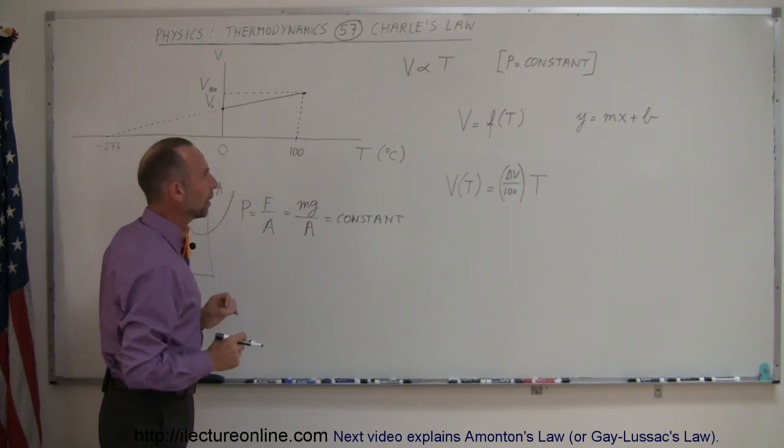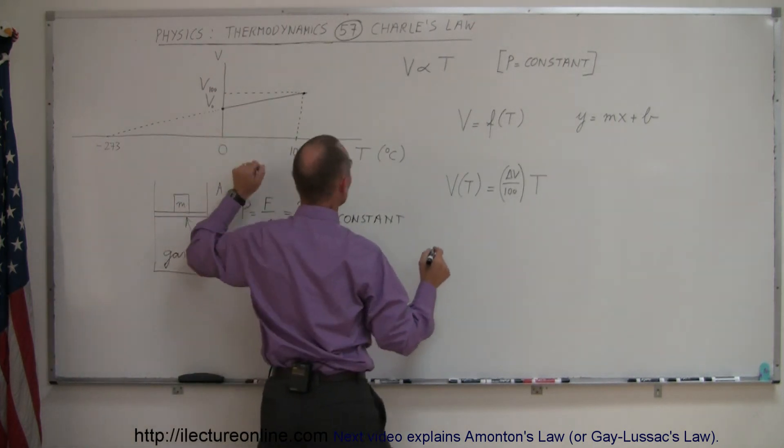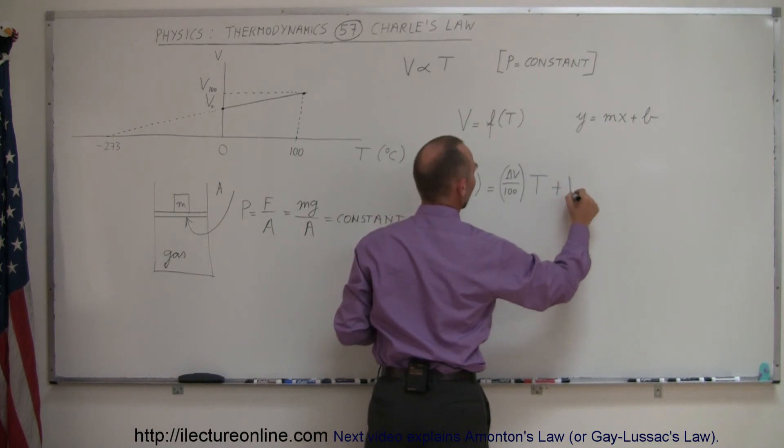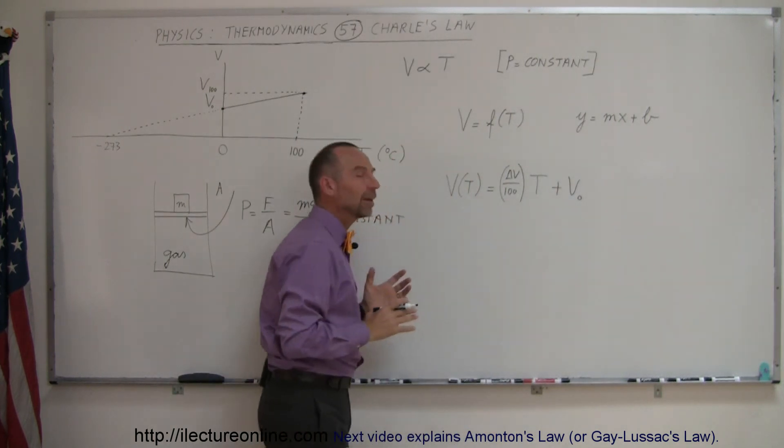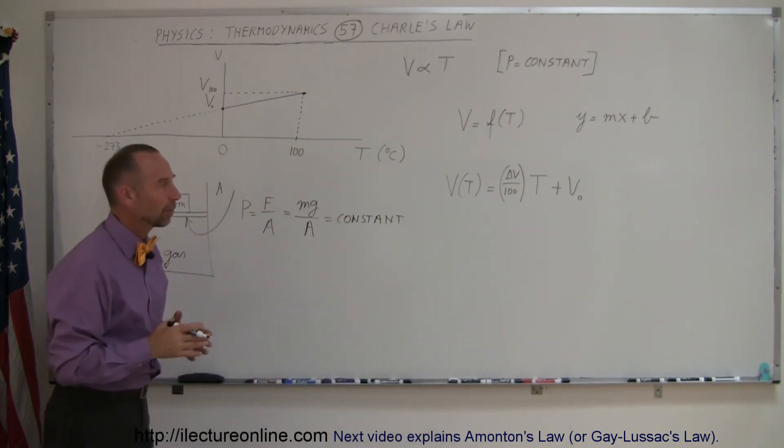And of course, that would have to be a measured quantity. And then, of course, we have the intercept, which would be plus V sub-naught. So that was the way in which we were able to set up that equation.